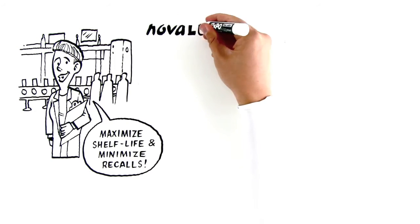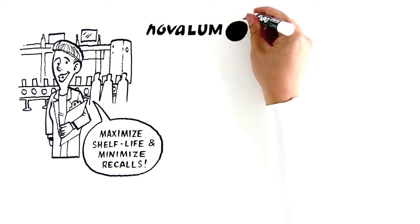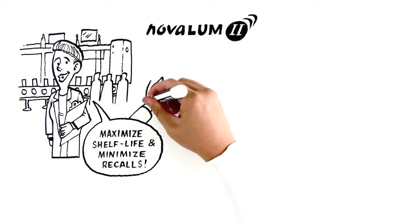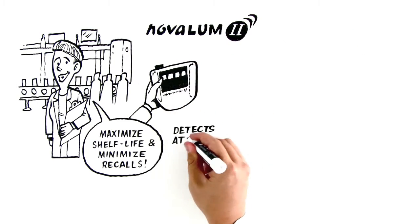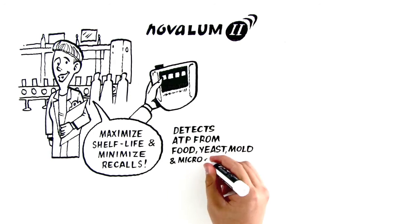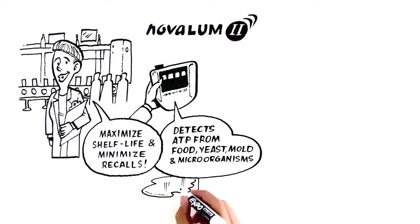That's why Sallie uses CHARM's NOVALOOM 2 ATP Detection System. It can run a range of sanitation hygiene tests on one instrument, detecting ATP from food, yeast, mold, and microorganisms on wet or dry surfaces.